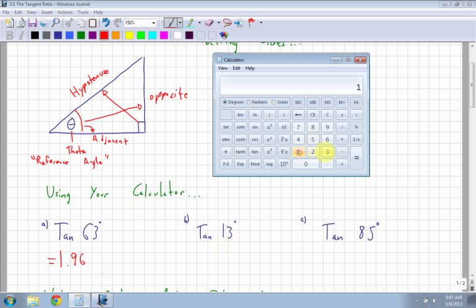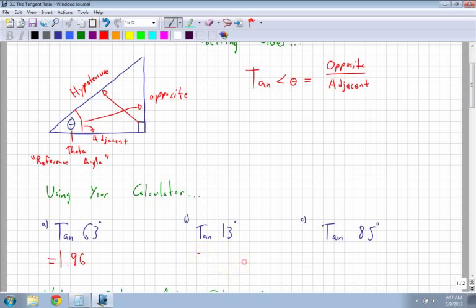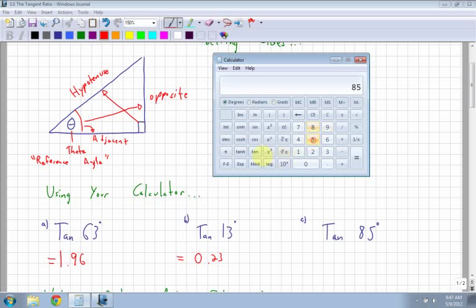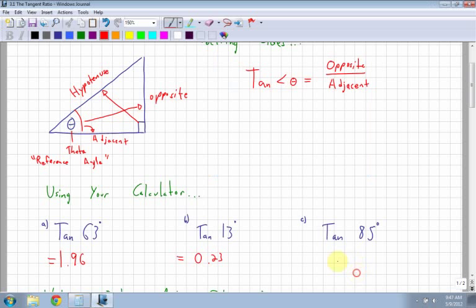Next one, tan 13, type in 13, hit your tan button, 0.23. And the last one I have here, which is 85 degrees, tan, 11.43.